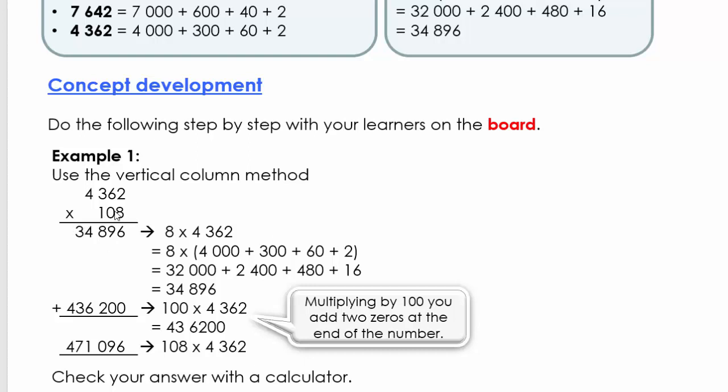Remember, in later sessions we're going to show you straight how to get to that answer. Now what we still have is 108. We're not going to multiply with the zero, but we still got a hundred that we need to multiply with that number. So what we're going to say is 100 times 4,362. We know when we multiply with 100 we just need to add two zeros, so that is the answer.